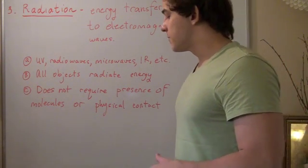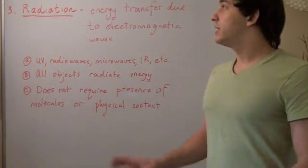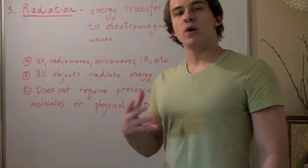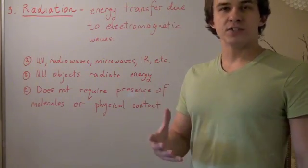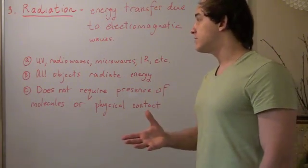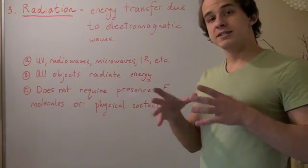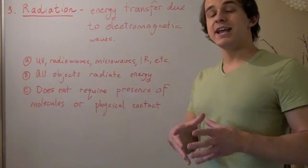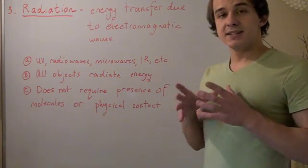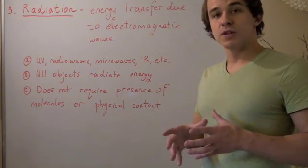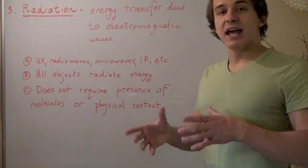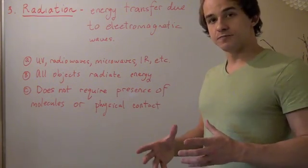The third and final type of energy transfer that occurs due to heat is called radiation. Radiation is the energy transfer that occurs due to the presence of electromagnetic waves. These electromagnetic waves can include UV waves, radio waves, microwaves, and infrared waves, and other waves as well. So all objects on Earth and in space radiate heat or radiate energy. And that's because every single object has some temperature. And zero Kelvin, the absolute zero temperature, is unattainable. So all objects vibrate or move to a certain extent. And therefore, all objects at all times radiate energy.